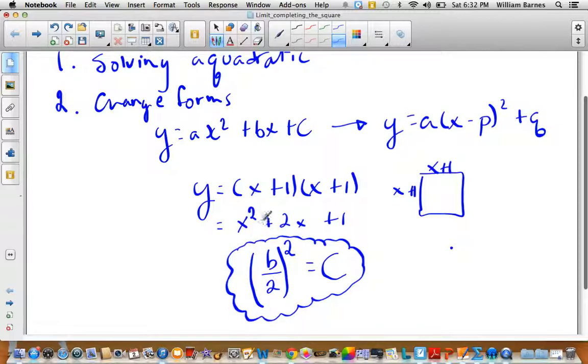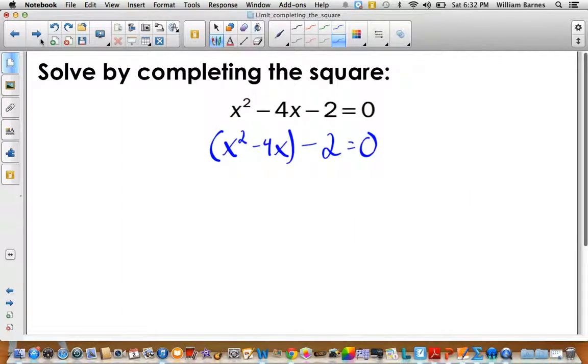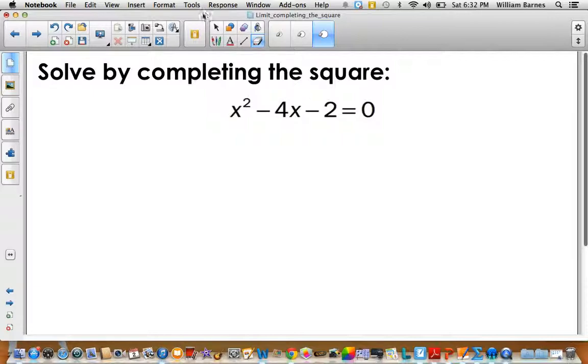Let's try an example of solving. The first step, which I usually do, is I usually group my x squared and my x terms together. That just helps me stay neat and organized. I group my first two terms together. This is what I'm going to turn into the perfect square trinomial.